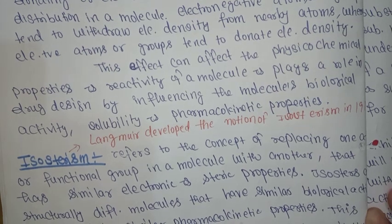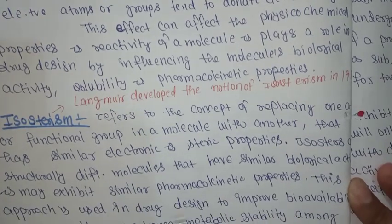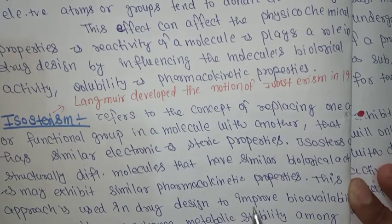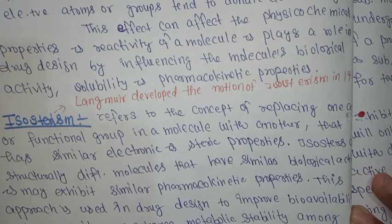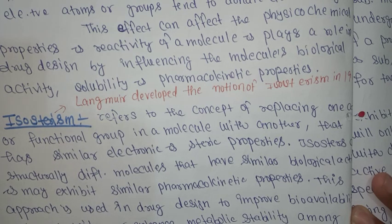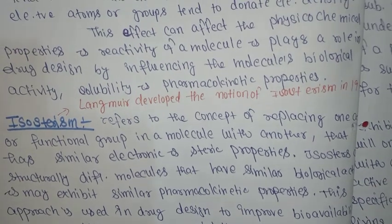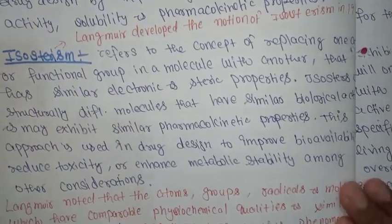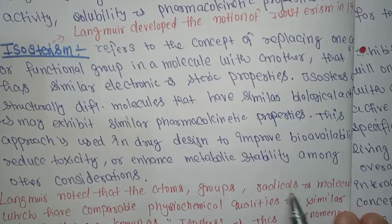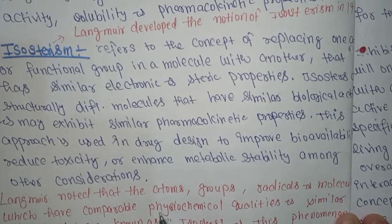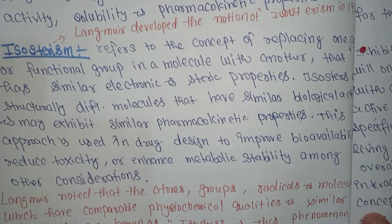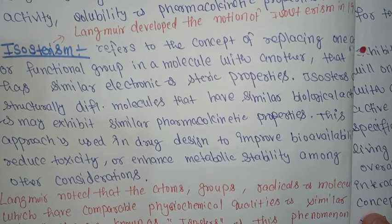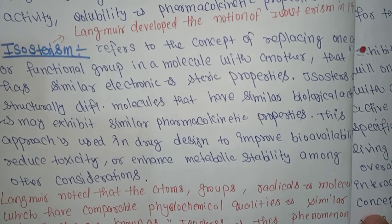Next is isosterism. This approach is used in drug design to improve bioavailability, reduce toxicity, and enhance metabolic stability, among other considerations. Langmuir noticed that atoms, groups, radicals, and molecules which have comparable physicochemical equality and similarity in their electronic structure are known as isosteres, and this phenomenon is called isosterism.